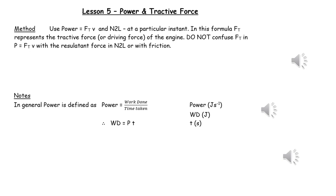Power is defined as the work done divided by the time taken, and therefore this can be rearranged so that work done is equal to power times time, where power is in watts or joules per second, work done is in joules, and time is in seconds.